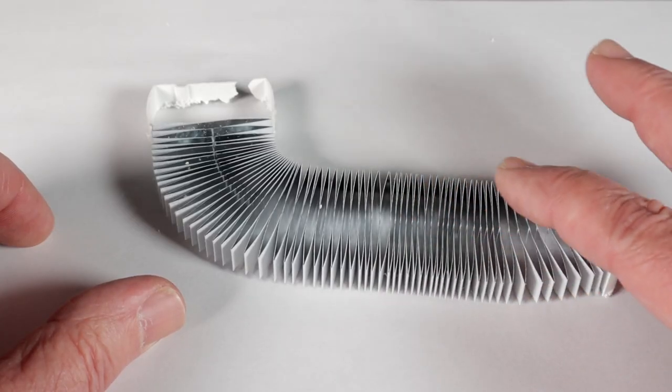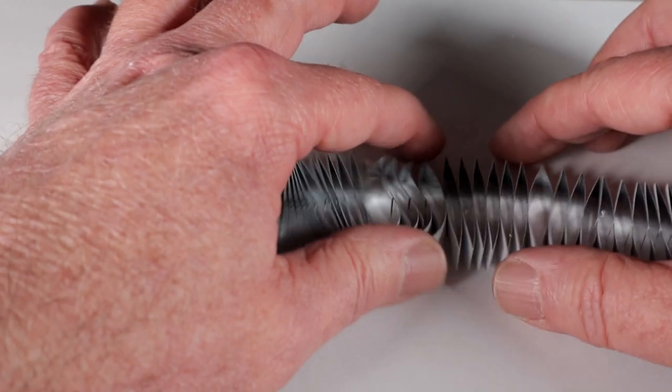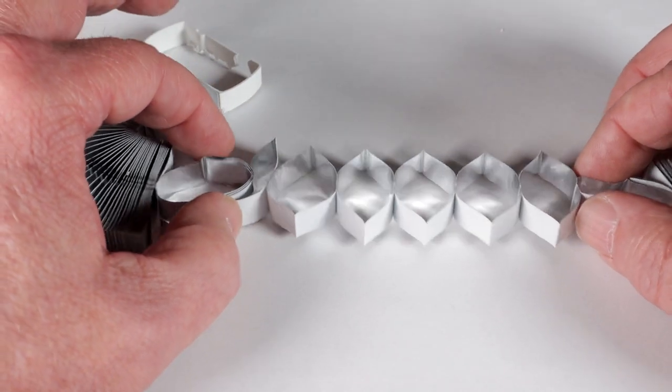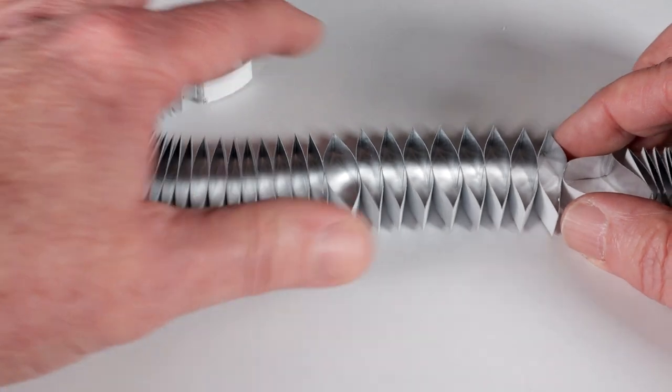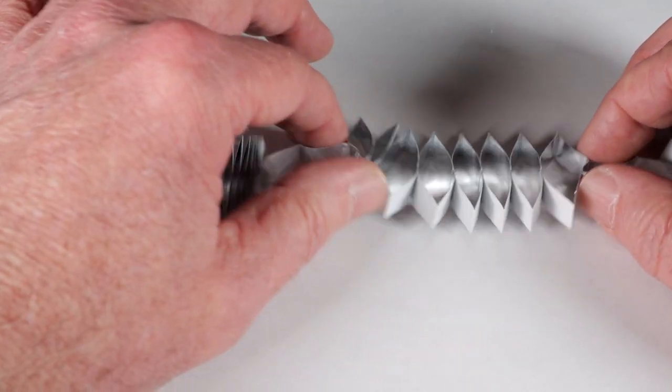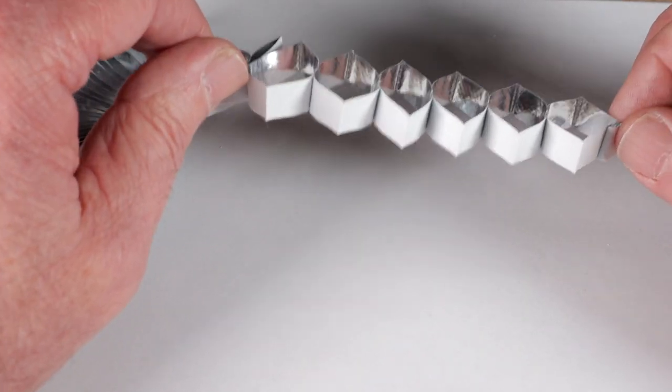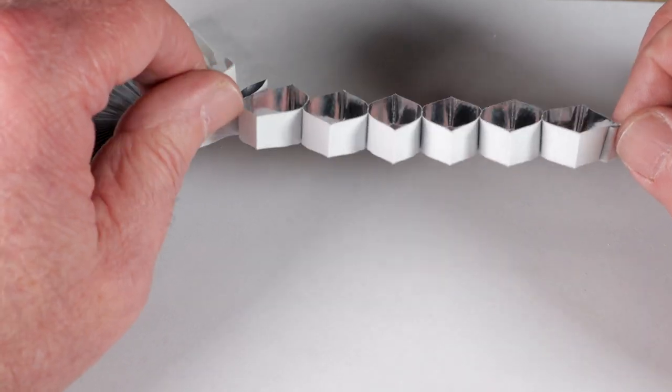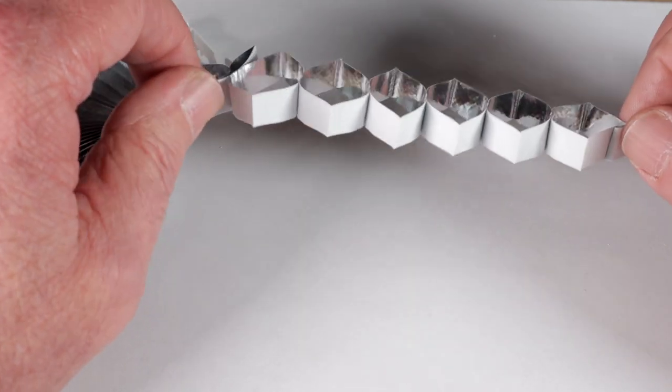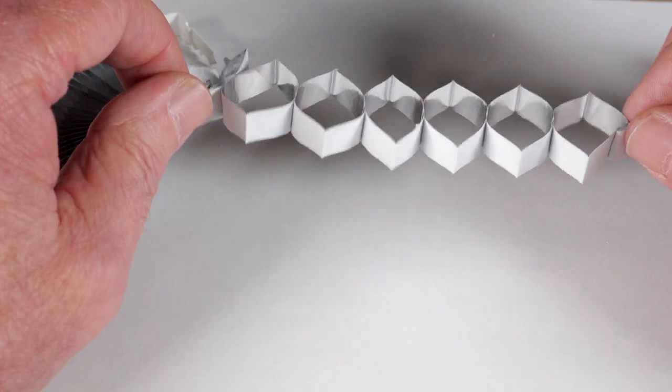The razor blade did a nice job of cutting a clean edge. The inside of this honeycomb is coated with a silvery material almost like a silver paint, probably reflective to some degree which helps the room darkening ability of this. So I removed the backing from the double sided tape.